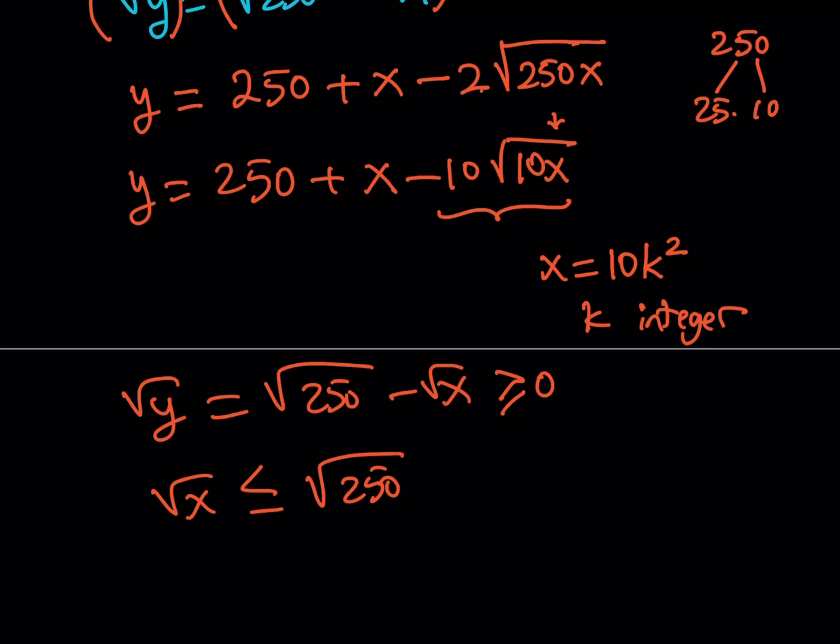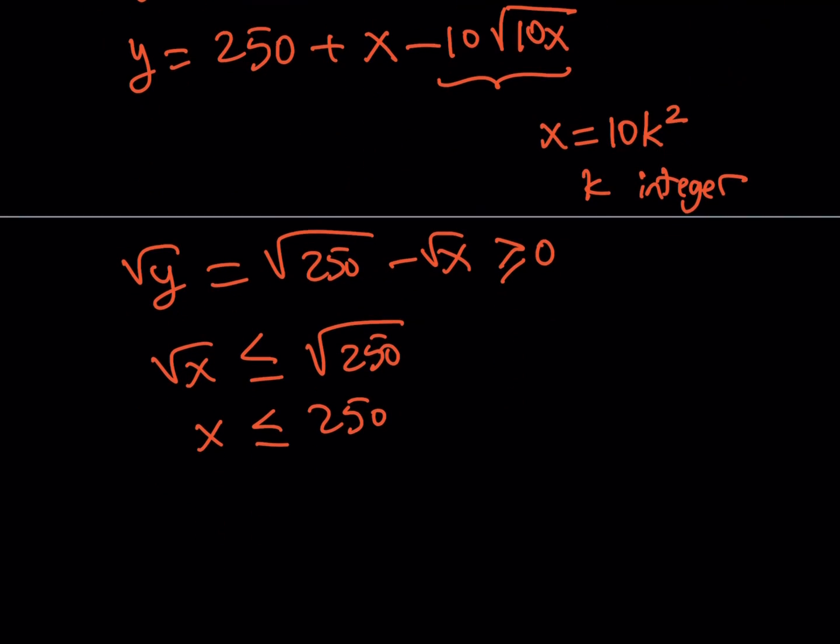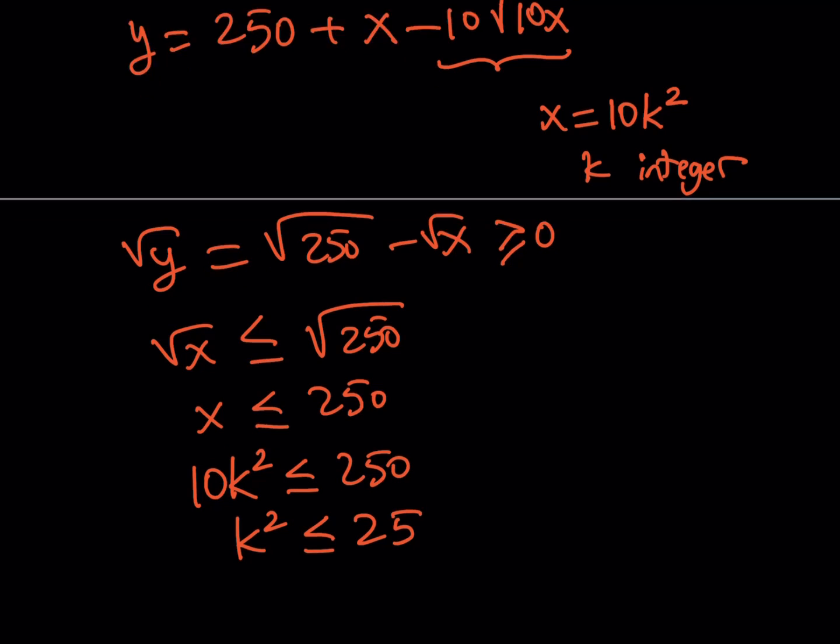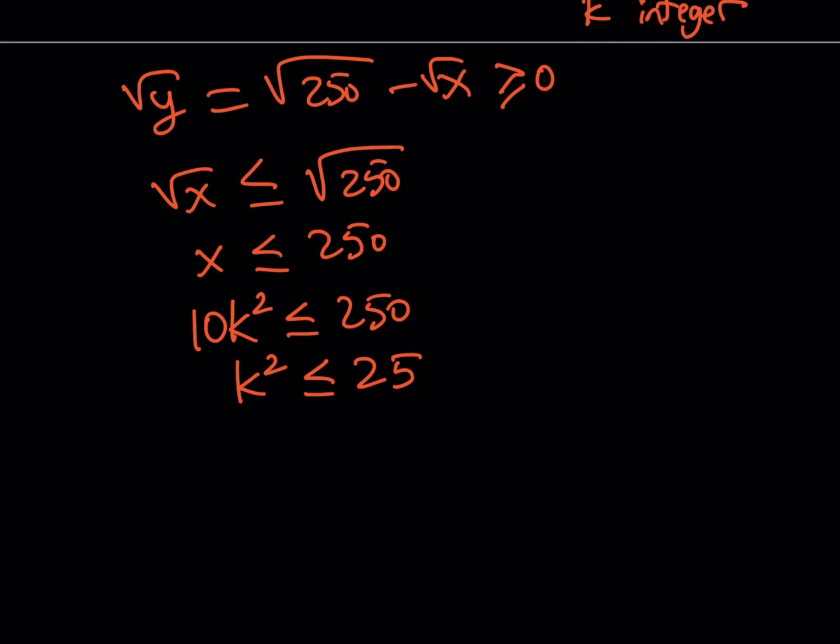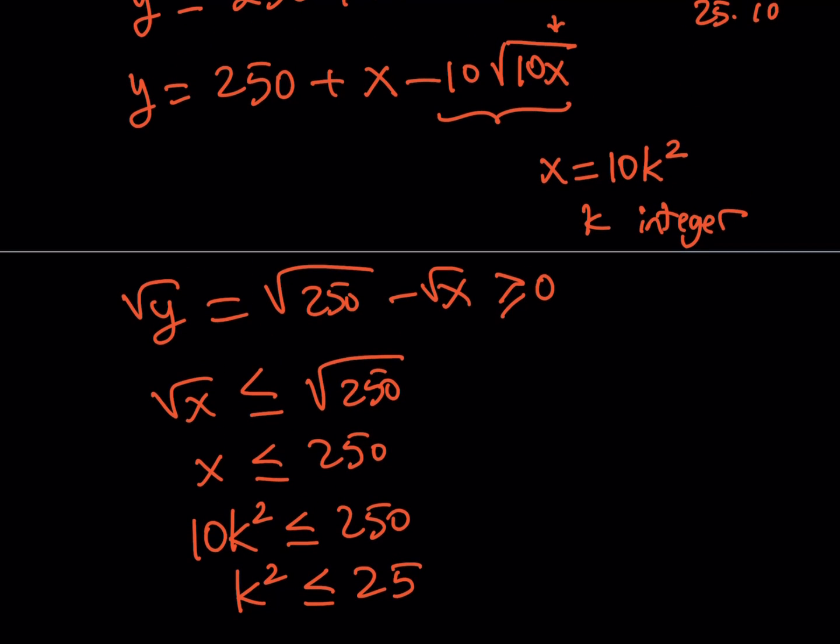And how do we simplify this? Well I'd like to replace x with 10k squared and square both sides so we're going to get x is less than or equal to 250 and now I'm going to replace x with 10k squared and divide both sides by 10 and this is going to be the result right? k squared needs to be less than or equal to 25.